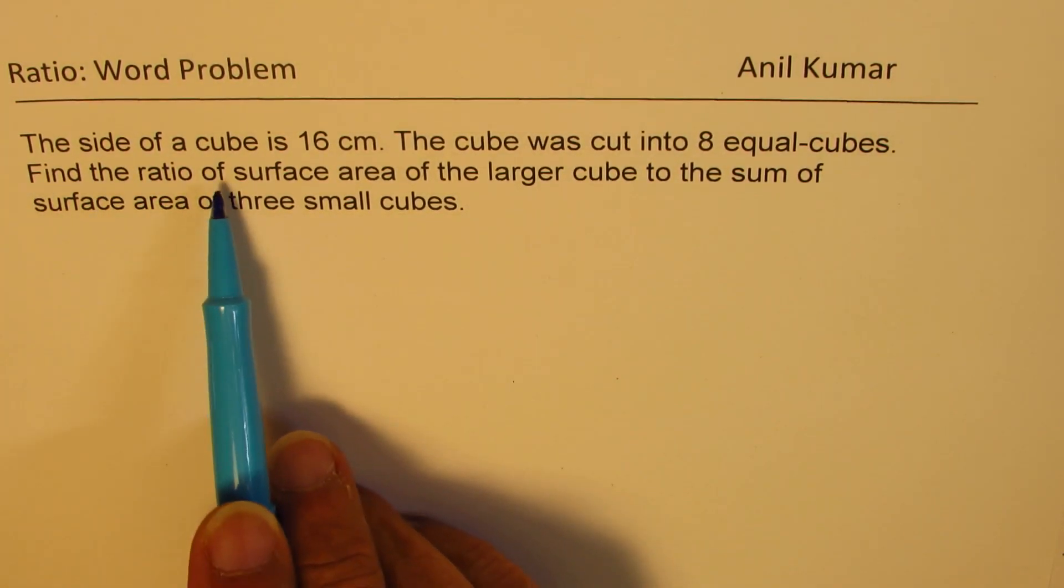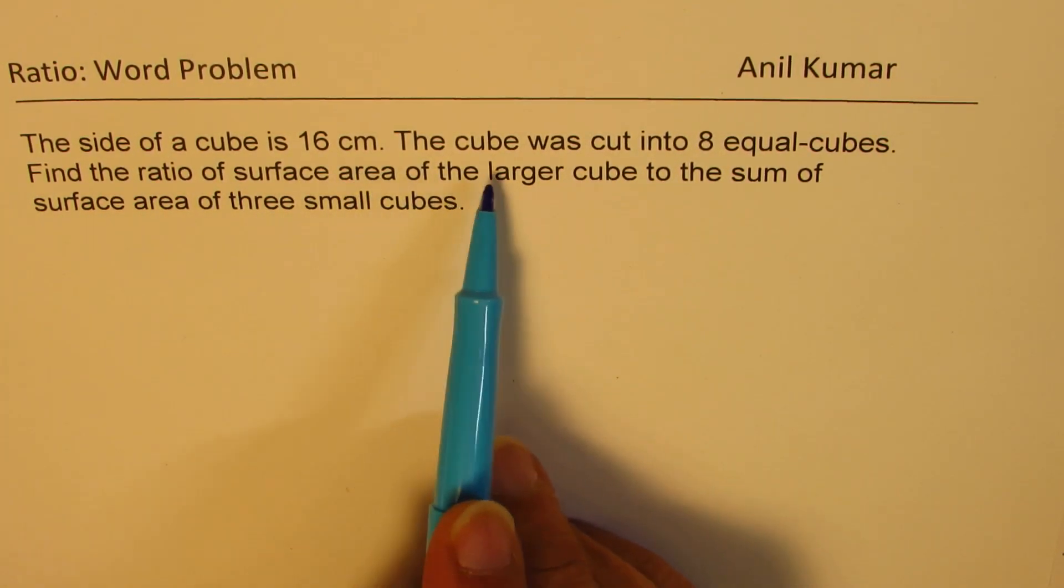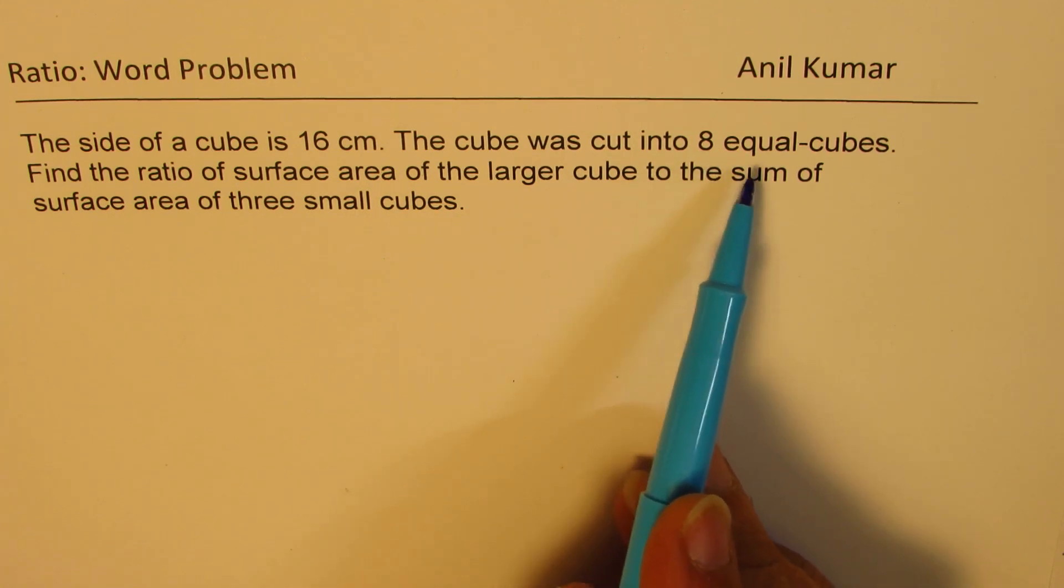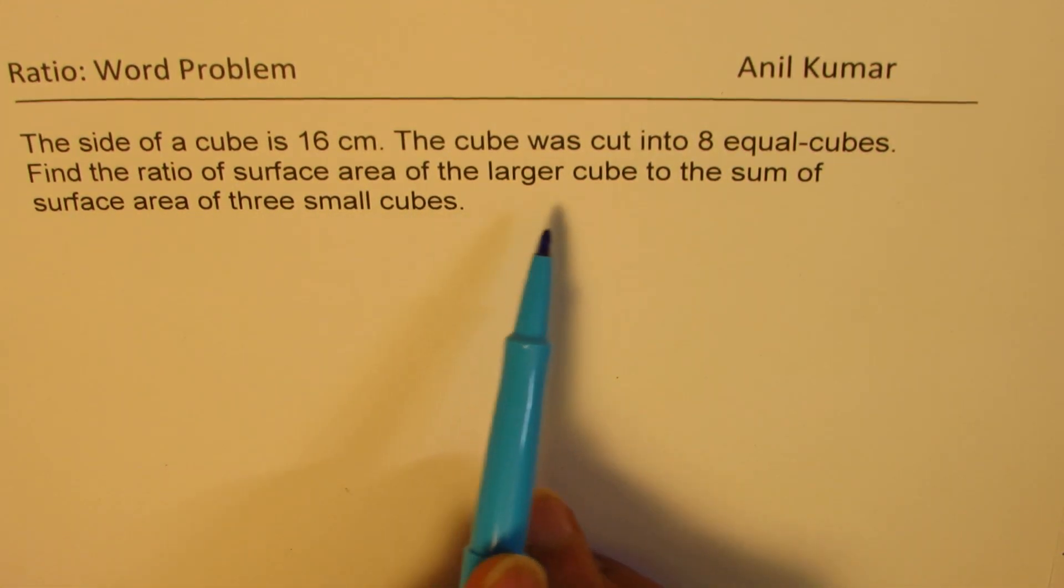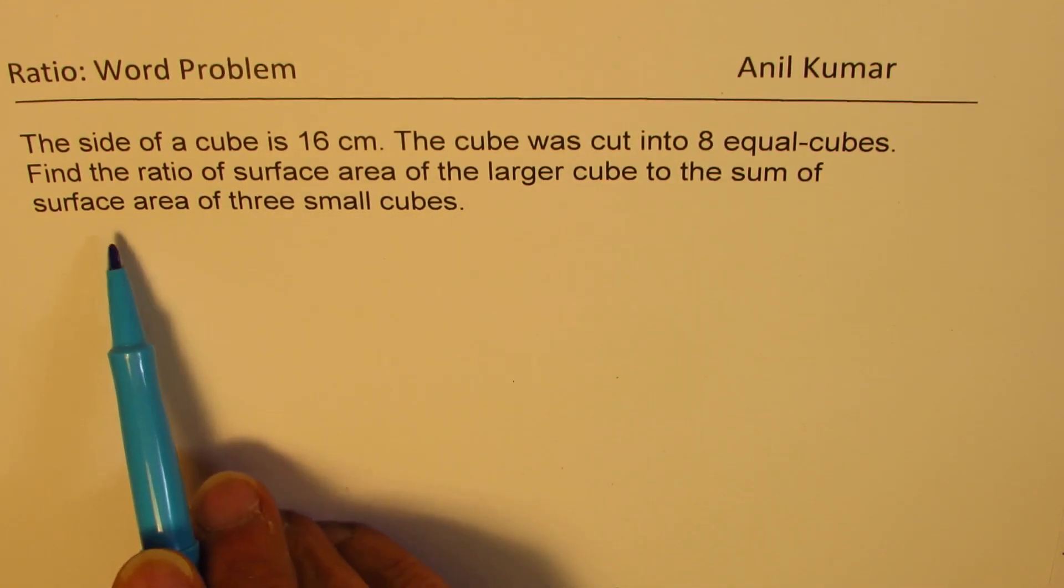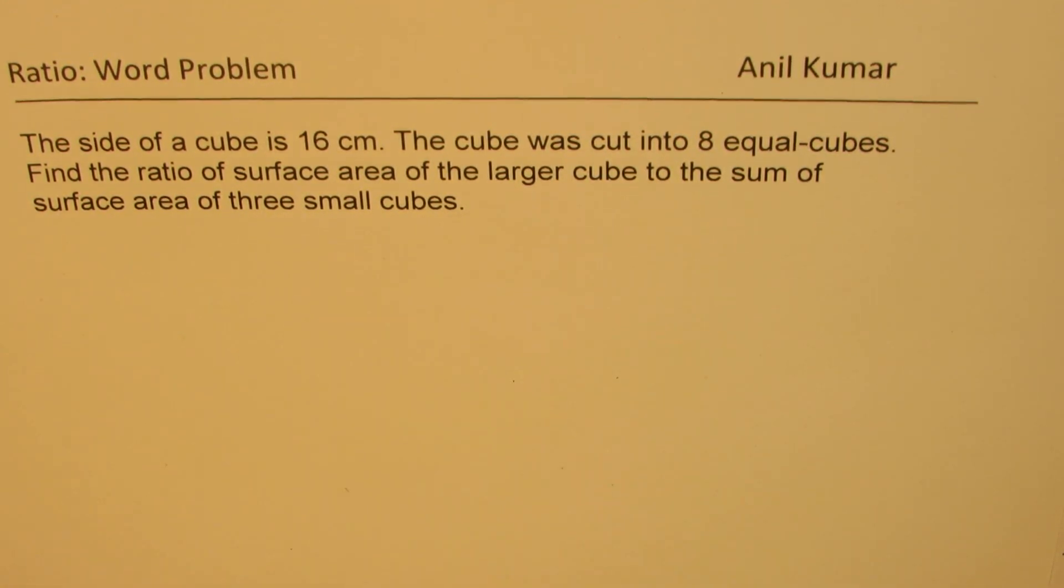The side of a cube is 16 centimeters. The cube was cut into eight equal cubes. Find the ratio of surface area of the large cube to the sum of surface area of three small cubes.